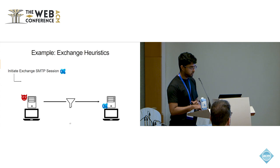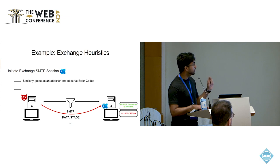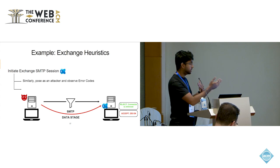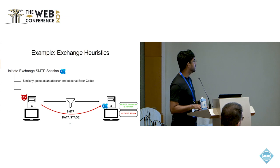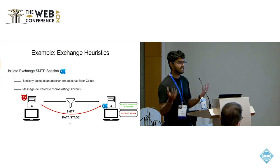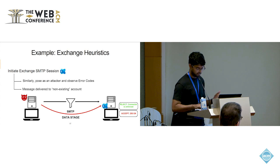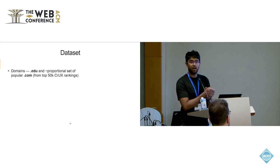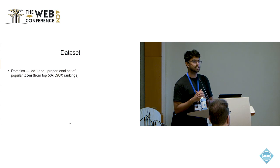Similarly, for Exchange, we use a similar heuristic — we initiate an Exchange SMTP session. But unlike the Gmail methodology, here we're able to do a similar inference during the data stage. And if we were to do this on an actual server, we would end up sending an email. So to mitigate that, we try to send an email to a non-existing email address at the domain so that we get a bounce back. Given this methodology, we went and measured the extent of this bypass on the domain. We did two TLDs: .edu and a proportional set of .com domains.